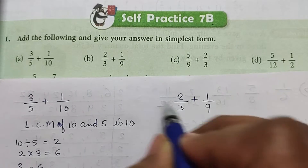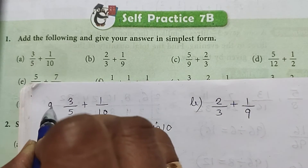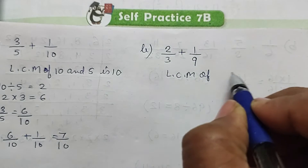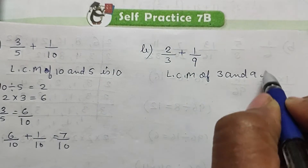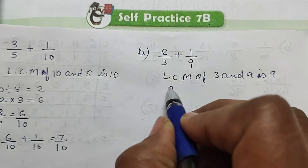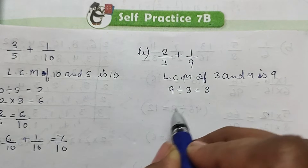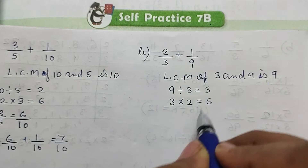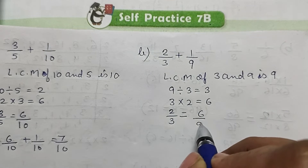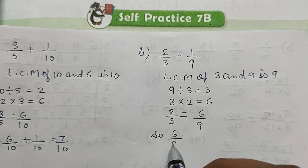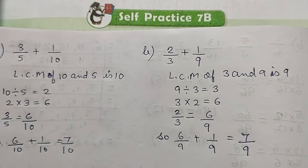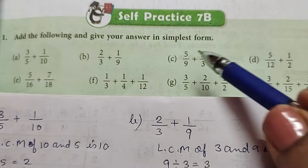Part b: 2/3 plus 1/9. LCM of 3 and 9 is 9. 9 divided by 3 is equal to 3, and 3 multiplied by 2 is equal to 6. Therefore 2/3 is equal to 6/9. So 6/9 plus 1/9 is equal to 7/9.